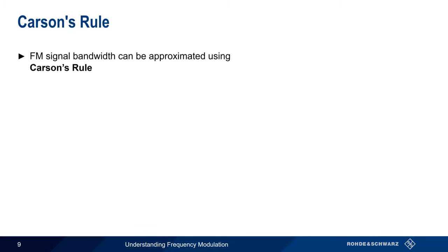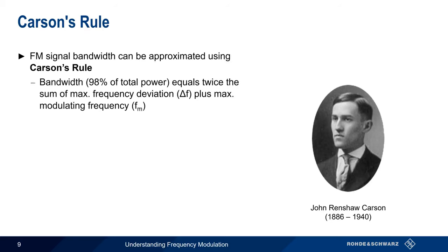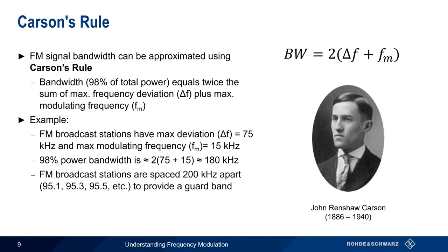We can approximate the bandwidth of an FM signal using something called Carson's Rule. This rule is named after John Renshaw Carson, who first formulated it in 1922. Carson's Rule defines the bandwidth of an FM signal as the region that contains 98% of the total signal power, and this can be computed by adding the maximum frequency deviation to the maximum modulating frequency and then multiplying this sum by 2. For example, a commercial FM broadcast station with a maximum frequency deviation of 75 kHz and a maximum modulating frequency of 15 kHz would have a bandwidth of approximately 180 kHz. FM broadcast stations are spaced 200 kHz apart to provide an additional guard band to prevent interference between adjacent frequencies.